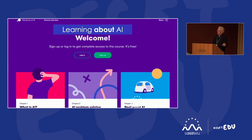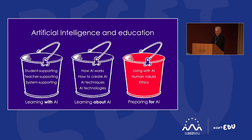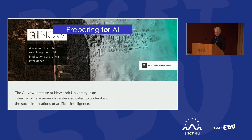In summary, this second bucket — learning about AI — is pretty well developed at the moment, although there's a long way to go. However, what about my third bucket, preparing for AI? The reality is that many institutions around the world have been set up to investigate the impact of AI on humanity. The questions are: how do we deal with AI hype, AI biases, fake news, the impact on privacy, on jobs — all those huge range of things.